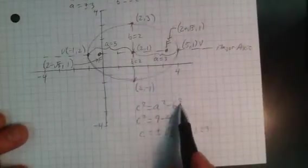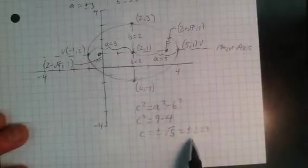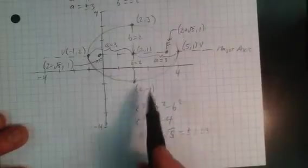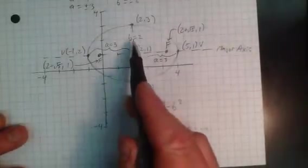What about the foci? How did I get that? Looks a little ugly. Remember I've got this relationship. I know this guy, this guy. So c is plus or minus square root 5. It's about 2 and a quarter for graphing purposes.